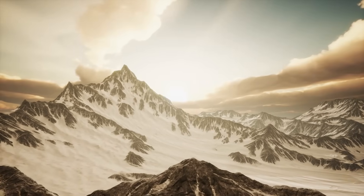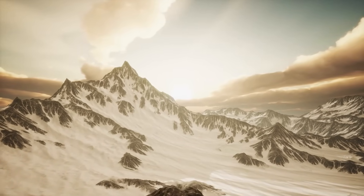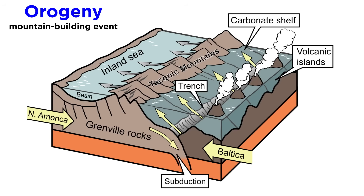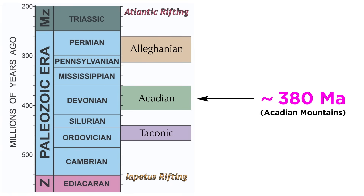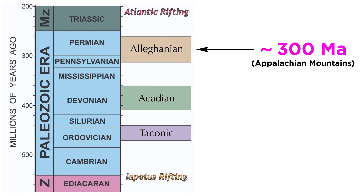The Paleozoic was a time of great mountain building along eastern North America. North America collided with three separate land masses, causing three separate orogenies, or mountain building events. The first orogeny is called the Taconic orogeny, occurring 450 million years ago. The second is called the Akkadian orogeny, at 380 million. And the third and final orogeny, called the Alleganian orogeny, occurred 300 million years ago and was responsible for forming the Appalachian Mountains.